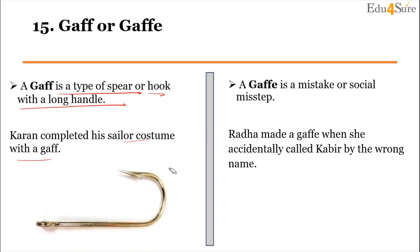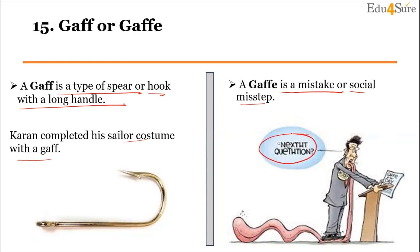Now, gaffe with an E is a mistake or a social misstep — an unintentional act or remark that has caused embarrassment, a blunder. For example: 'Radha made a gaffe when she accidentally called Kabir by the wrong name.' To remember the difference, you can associate gaffe (with E) with 'errors' — the E stands for error.